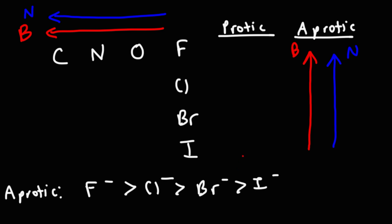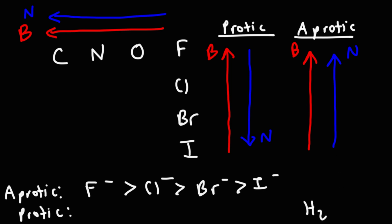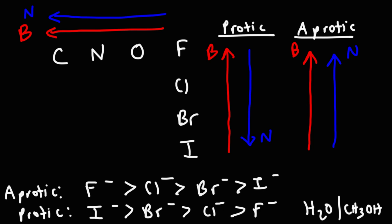Now in a protic environment, fluoride is still the stronger base, but iodide is going to be the better nucleophile. So if the solvent is something like water or methanol — which has hydrogen bonding, making it a protic solvent — in that situation iodide is the better nucleophile, then bromide, then chloride, then fluoride. So iodide behaves as a better nucleophile in a protic environment, but fluoride behaves as a better nucleophile in an aprotic environment.